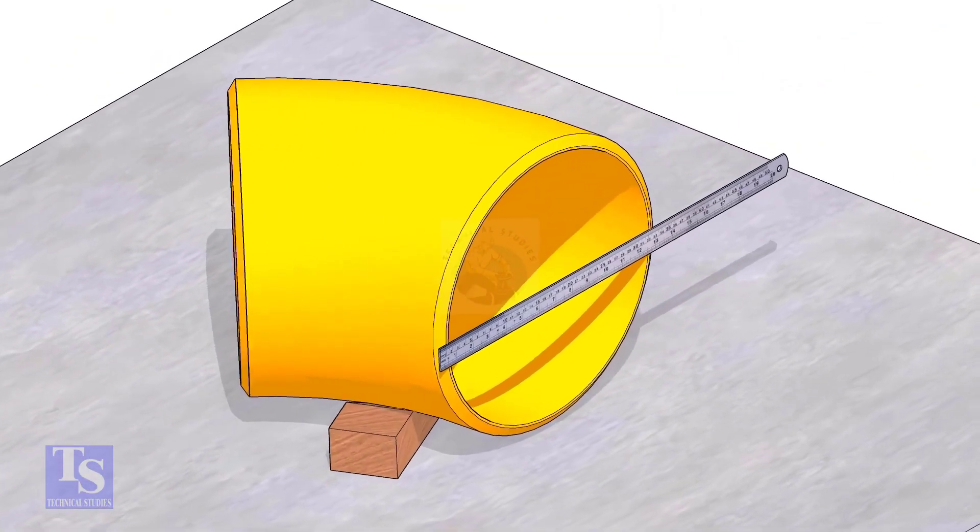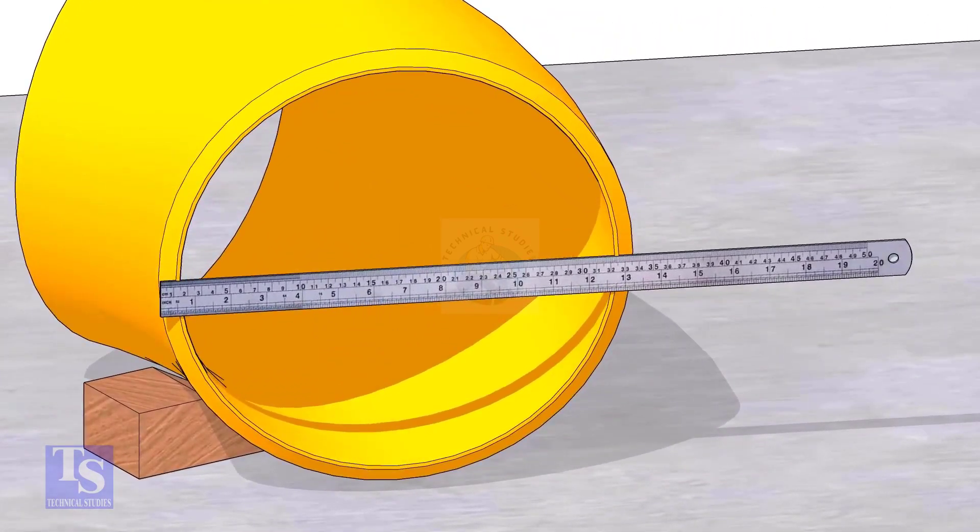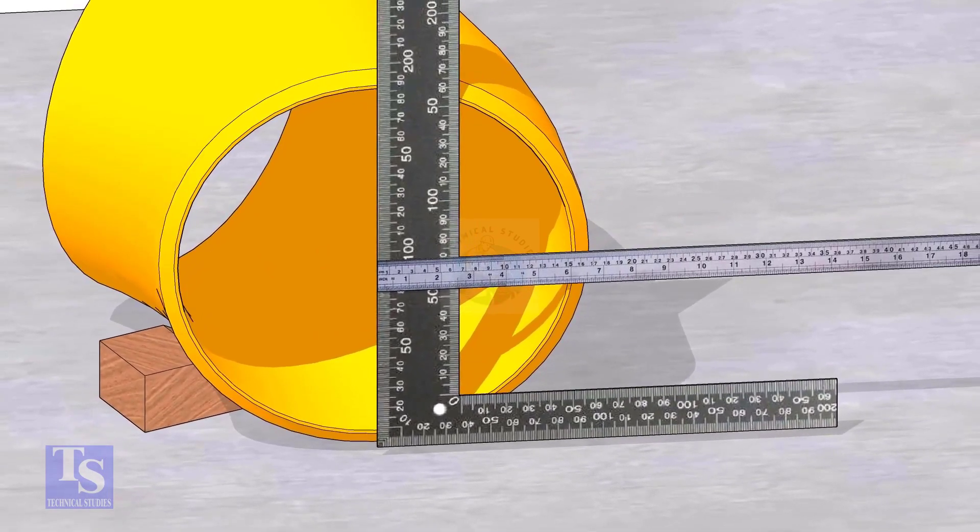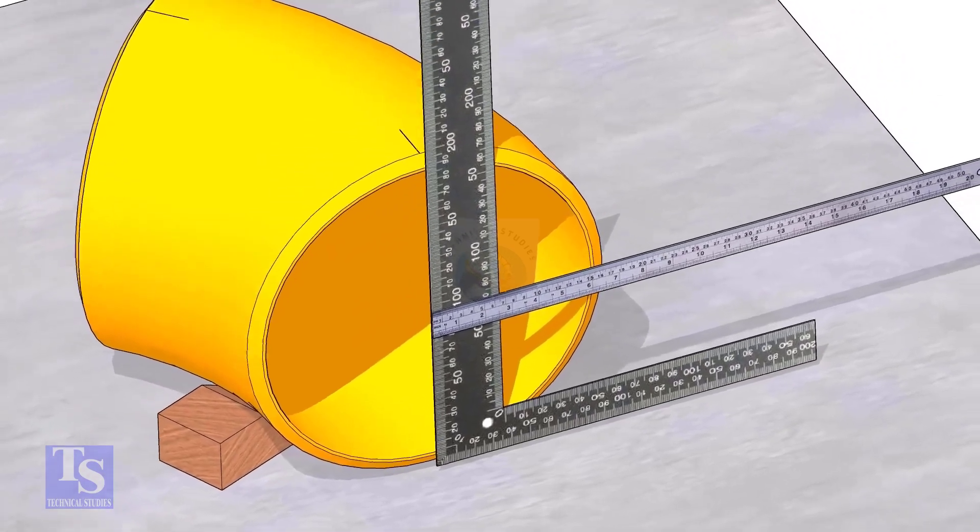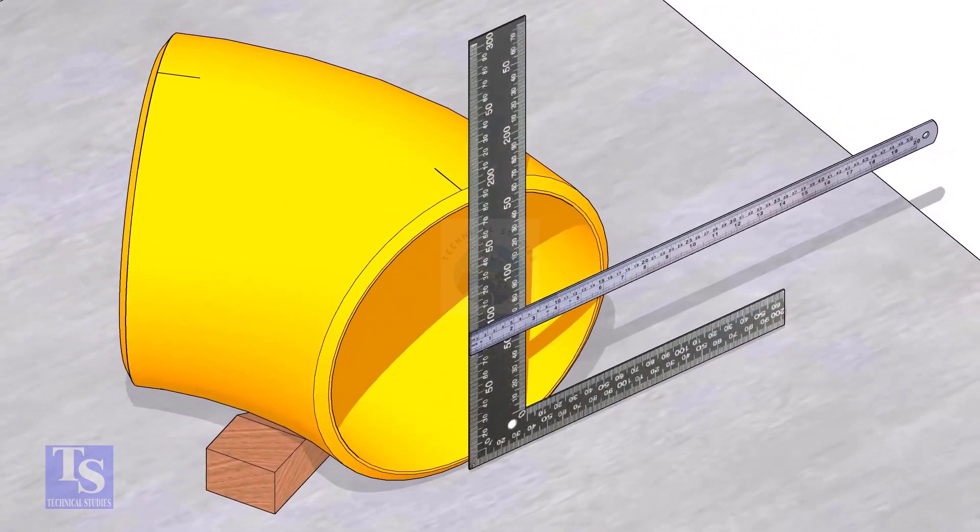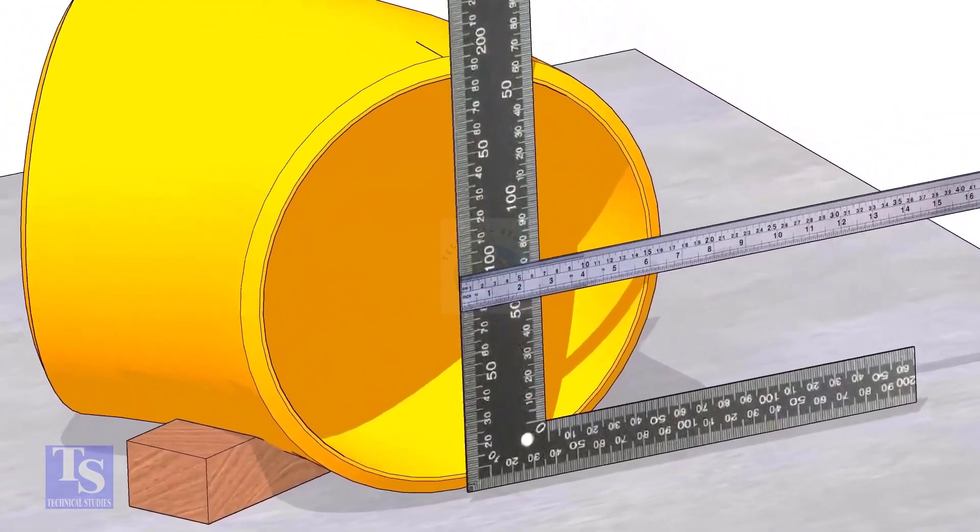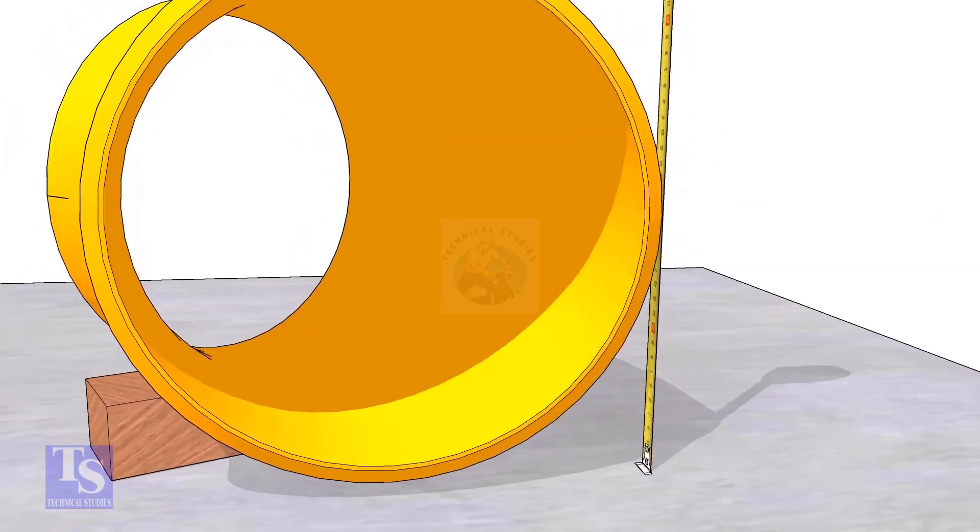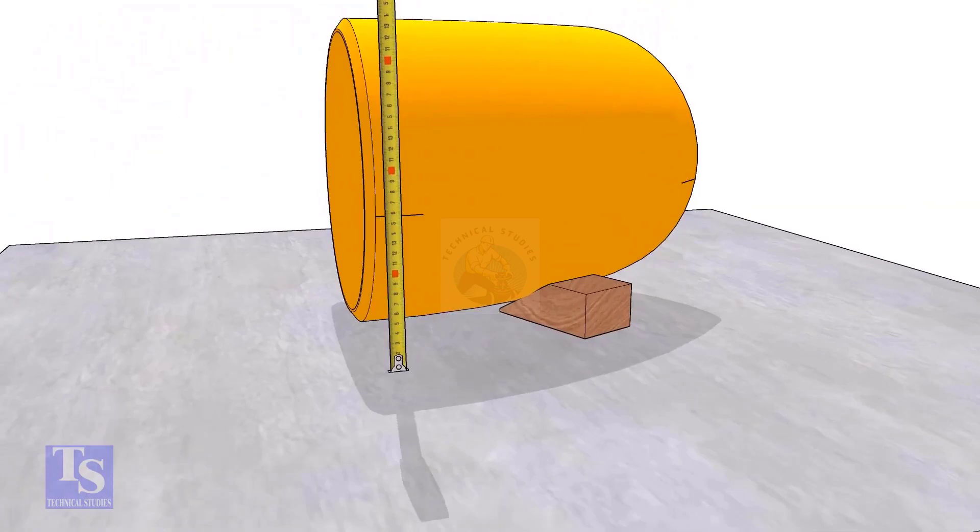Put a right angle at the middle of one face of the elbow. Make sure the edge of the right angle is exactly at the center. Draw a line where the right angle edge touches the elbow face on the top and bottom side. Similarly, mark the center of the other end and mark the half OD on both sides as shown.